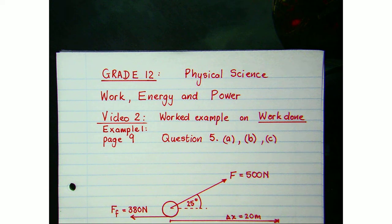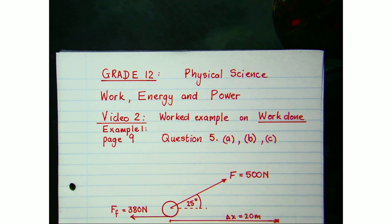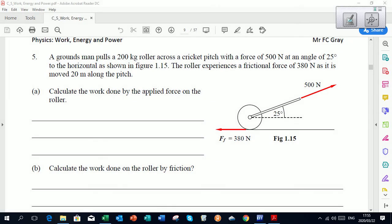This is the second video on the grade 12 chapter Work, Energy and Power. Today we're going to apply what we learned in video one, where we learned about the definition of work done on an object by a force. We're going to do two worked examples. The first worked example is found on page nine of your notes — question five is the one to complete. Pause the video and attempt the question, then come back and check your answer.